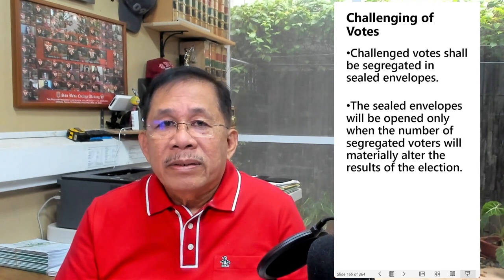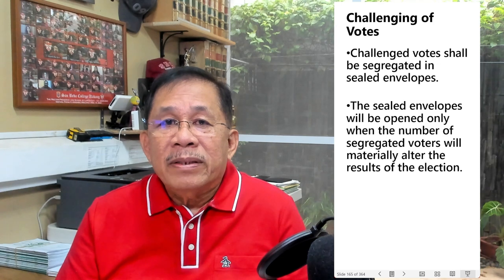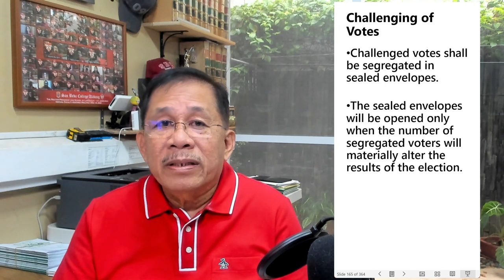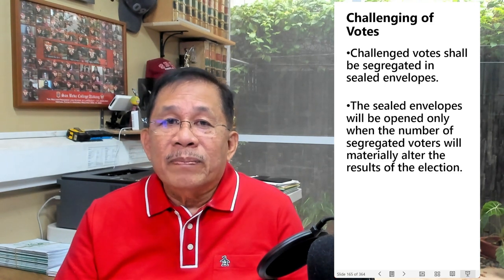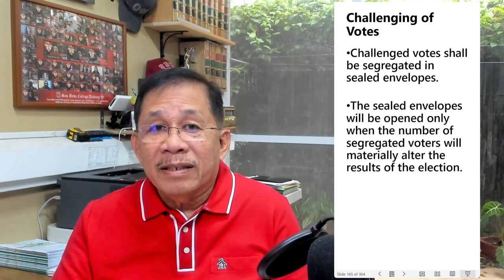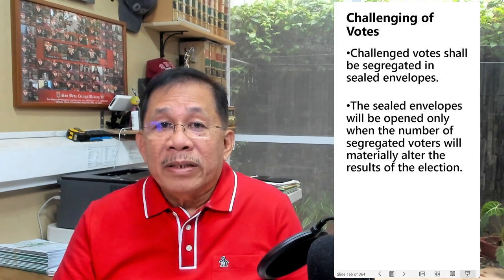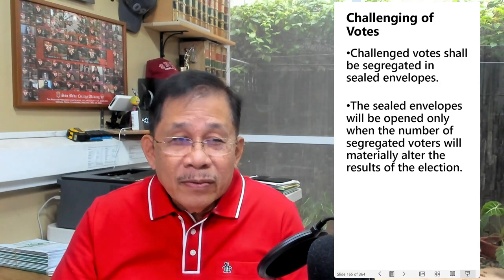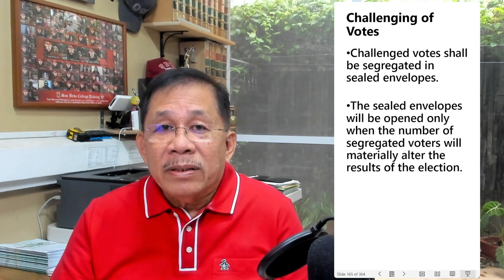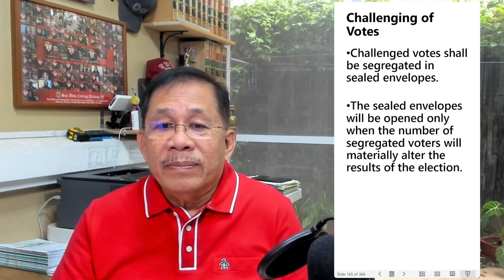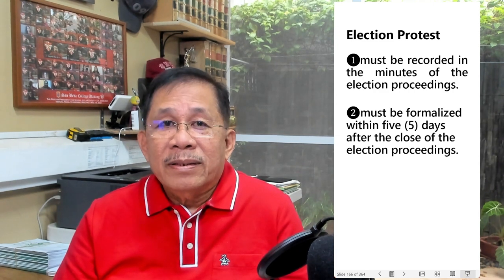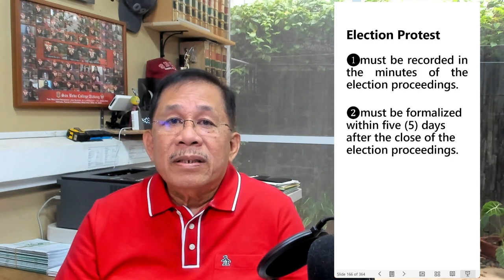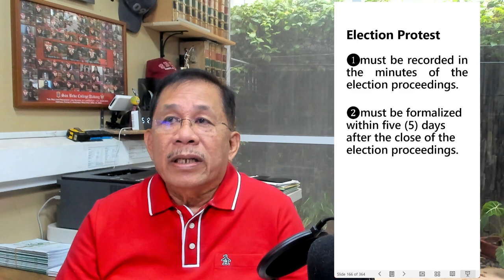During the election, a vote may be challenged. If this happens, the challenged ballot will be placed in an envelope, sealed in the presence of the parties, with the name of the challenging party indicated, and the sealed envelope must be signed by the representatives of the parties. These sealed envelopes will be opened only when the number of segregated voters will materially alter the result of the election. Protests may also be lodged by a party, and must be recorded in the minutes of the election proceedings.